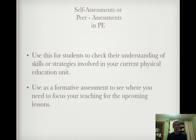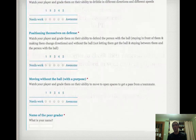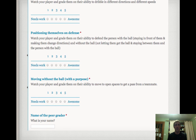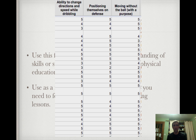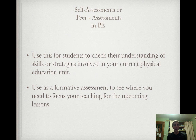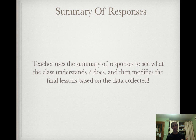Self-assessments and peer assessments in PE — you're going to check their understanding of skills and strategies in the unit. Use it as a formative assessment to see where you need to focus your teaching, see which students are struggling and which are excelling, and adjust accordingly. This is a simple one-to-five scale where a partner grades them. You could use it as a teacher grade, and I got grades back extremely quickly — by the end of the day.